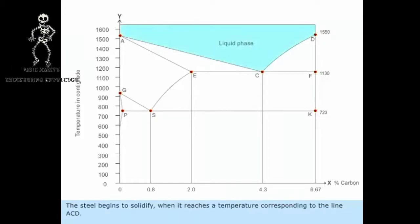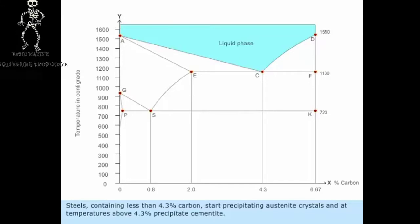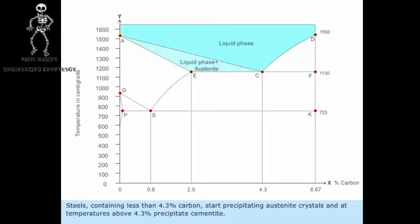The steel begins to solidify when it reaches a temperature corresponding to the line ACD. Steels containing less than 4.3 percentage carbon start precipitating austenite crystals, and at temperatures above 4.3 percentage precipitate cementite.